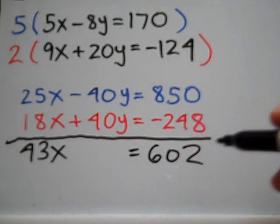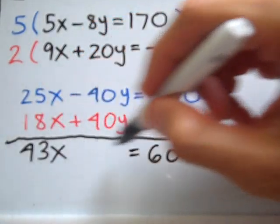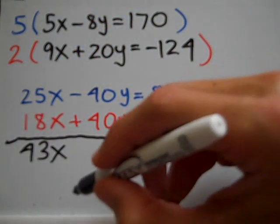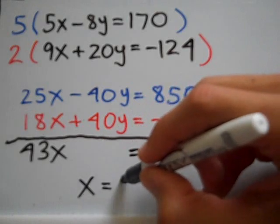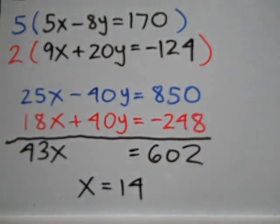So I have the new equation 43x is equal to 602 from which I can determine that x is equal to 14. So now I've solved for one of the two variables. I've solved for x.